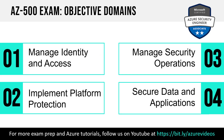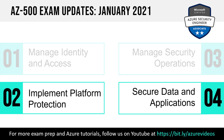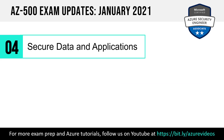When we look at the objective domains in AZ-500, there are four of them, and the changes come in two areas — domains two and four — which are implement platform protection and secure data and applications. I want to start with domain four because this is where the bulk of the changes come into play.